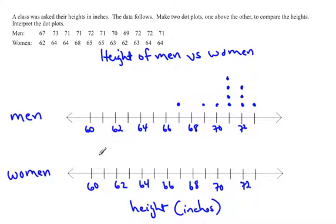Now that we have the men's done, we'll go do the exact same thing for the women's. Notice the first number is 62, so we'll put a dot. 64 is the next one, so again, it's the same height. Then there's another 64.